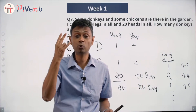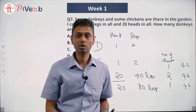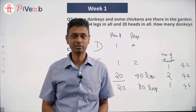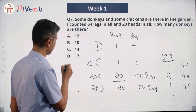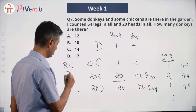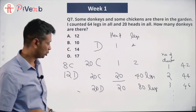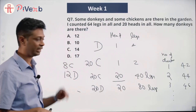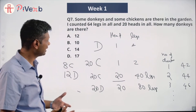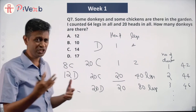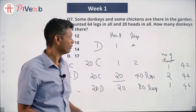Each donkey gives me two extra legs, so I need 24 more legs divided by 2 — that means 12 donkeys. My scenario: 8 chickens and 12 donkeys. Why 8 chickens? Because there are 20 animals total and 12 are donkeys, so the remaining 8 are chickens. This is obviously a very intuitive way of doing this.